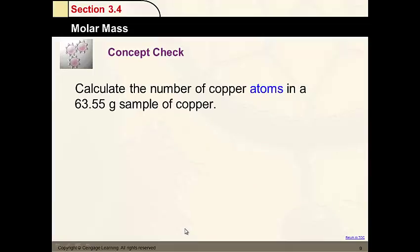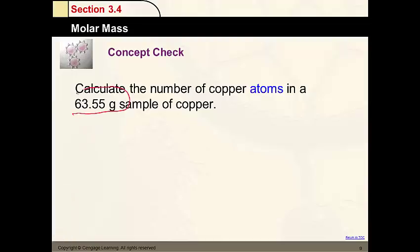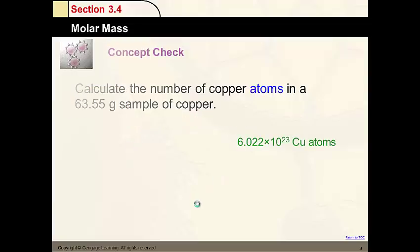Calculate the number of copper atoms in 63.55 grams of copper. This is the mass of 1 mole of copper, so this is 1 mole. And 1 mole equals 6.022 times 10 to the 23rd atoms — that's the answer.